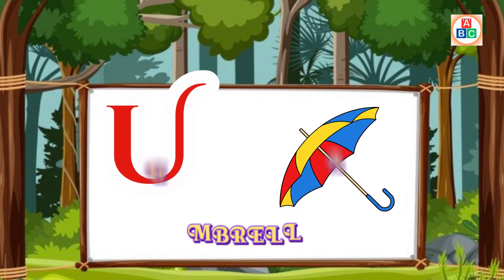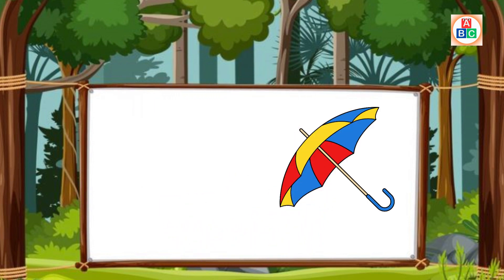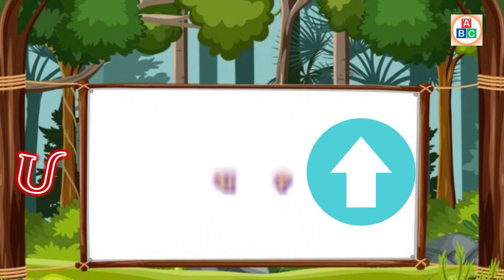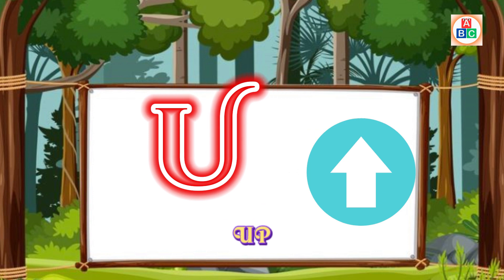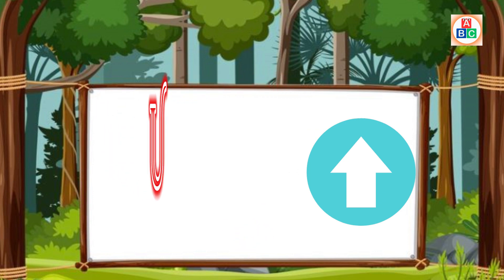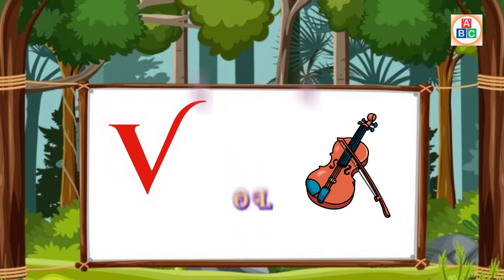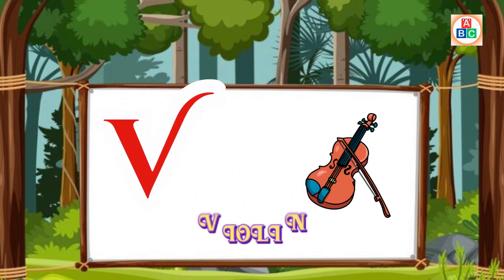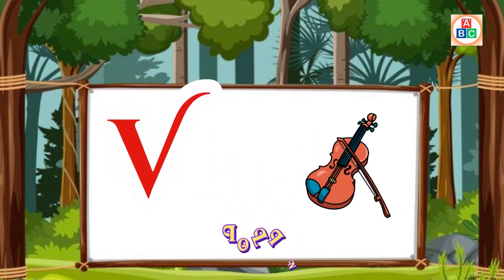U is for Umbrella. U. U. Umbrella. U is for Up. U. U. Up. V is for Violin. V. V. Violin.